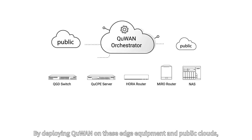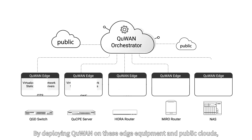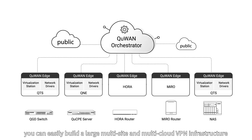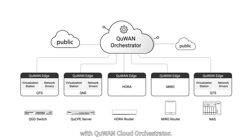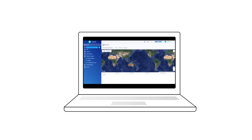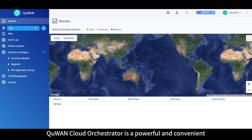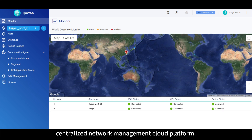By deploying Q-WAN on these edge devices and public clouds, you can easily build a large multi-site and multi-cloud VPN infrastructure with Q-WAN Cloud Orchestrator. Q-WAN Cloud Orchestrator is a powerful and convenient centralized network management cloud platform.